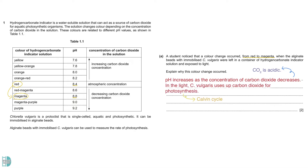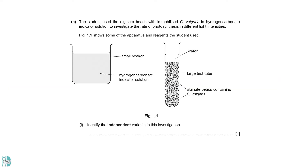In the presence of light, C. vulgaris uses up carbon dioxide for the Calvin cycle in photosynthesis. In Part B, we have the setup for the investigation. The independent variable is light intensity because the student wants to check its effect on the rate of photosynthesis.